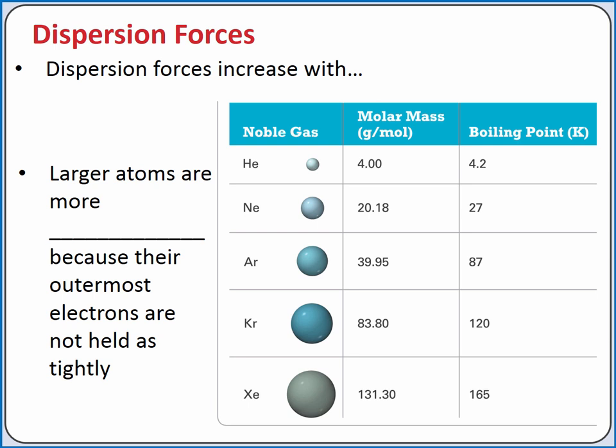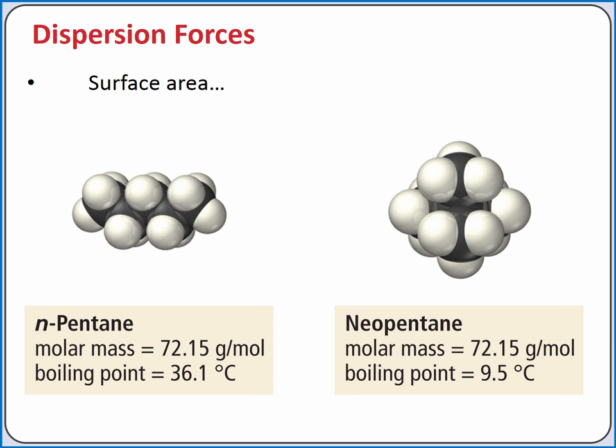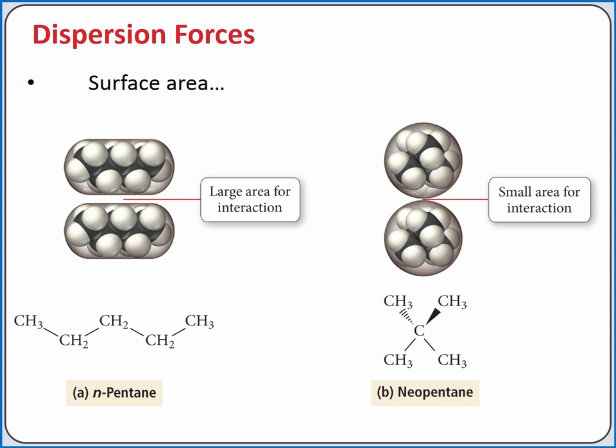Our noble gases are getting larger and more polarizable, increasing their intermolecular forces. Dispersion forces also increase with increasing surface area, because there is more opportunity to set up instantaneous and induced dipoles. We can see this by comparing the boiling points of n-pentane and neopentane. The boiling point of n-pentane is 36.1 degrees Celsius, whereas the boiling point of neopentane is 9.5 degrees Celsius. Both have the same molar mass; the difference is that n-pentane's carbons are in a line, increasing surface area and thus dispersion forces.